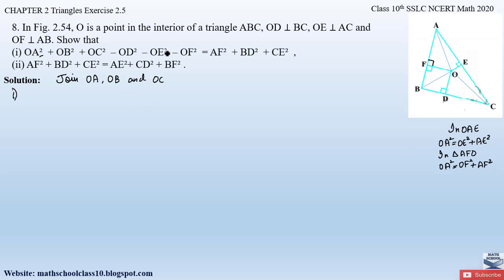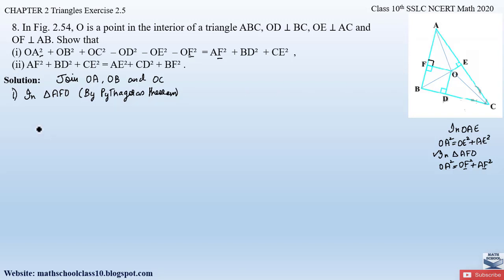Looking at the first part of what we have to prove, the left-hand side has OA², and the right-hand side has AF and OF — which matches triangle AFO. Triangle OAE gives OE but AE is not present in what we need to prove. So we consider triangle AFO. By the Pythagoras theorem: OA² = OF² + AF². Let this be equation 1.